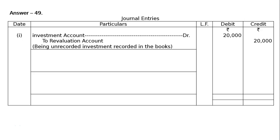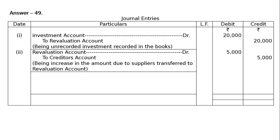Second entry: Unrecorded liability towards supplier for Rs 5,000. Revaluation account is debited and creditors account is credited. Being increased amount due to suppliers transferred to revaluation account. Increase in liability is an expenditure for the firm, hence debited to the revaluation account, also known as the profit and loss adjustment account.